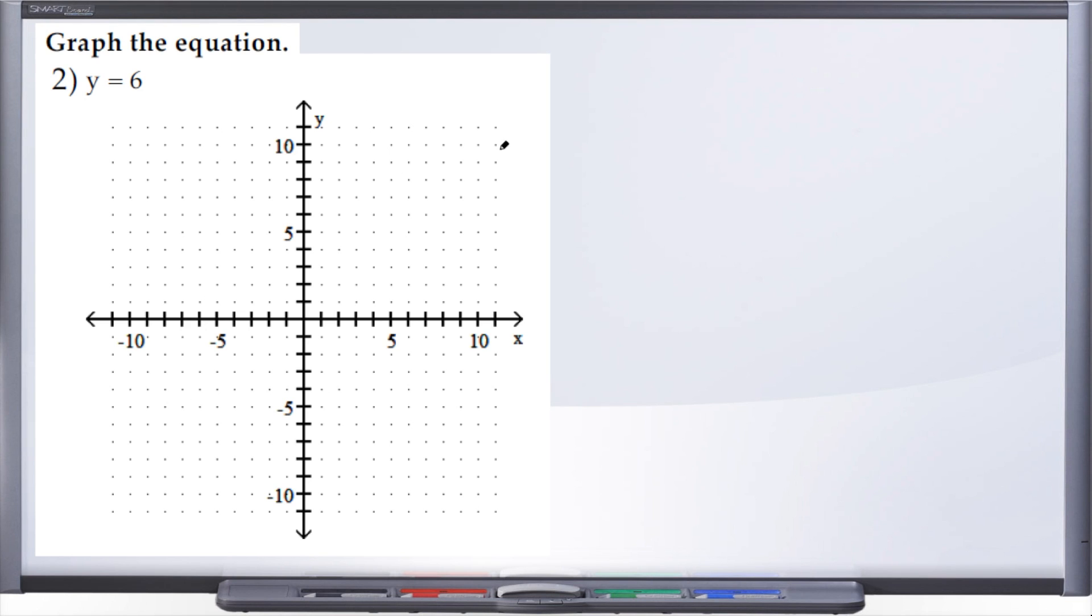Alright, number two, graph the equation. We've been given y equals 6, so you might notice something different about this equation versus number one. In number two, we only have a single variable, we're only working with y, whereas in question number one we had an x and a y.